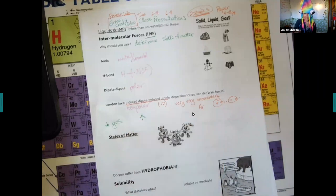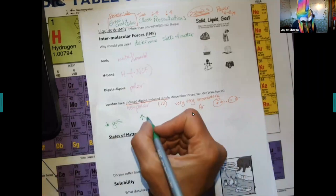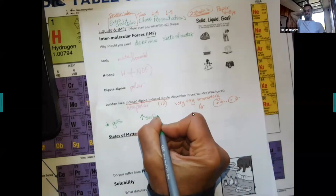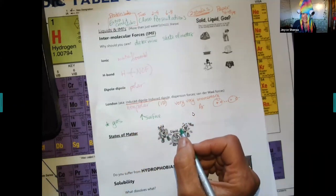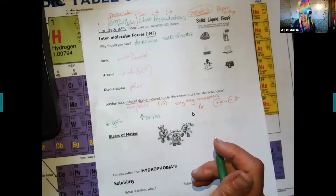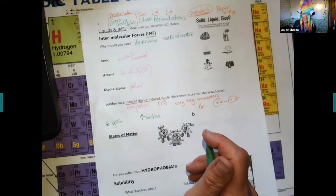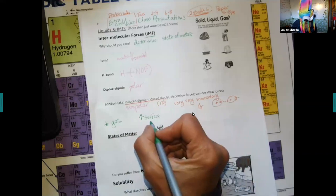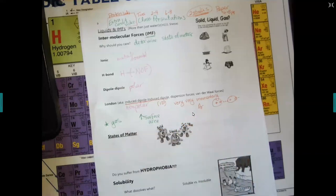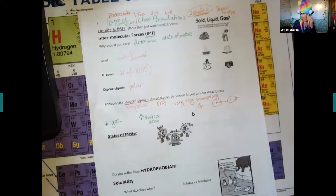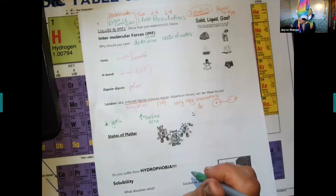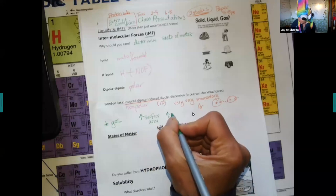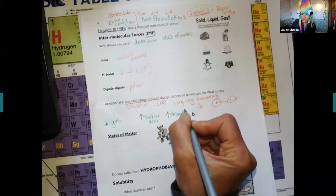As you increase the surface area, this is back to a comment that Major said, as you increase the surface area, increasing the surface area increases the strength. That is true only for London because there's no pool. You look at surface area.